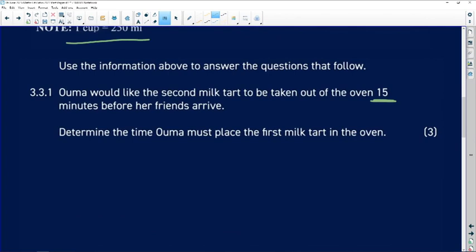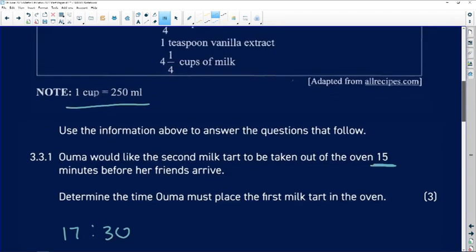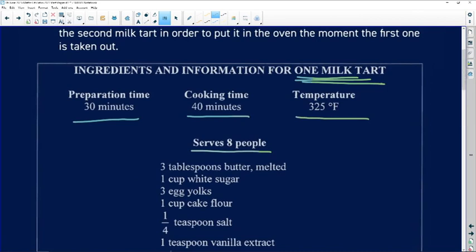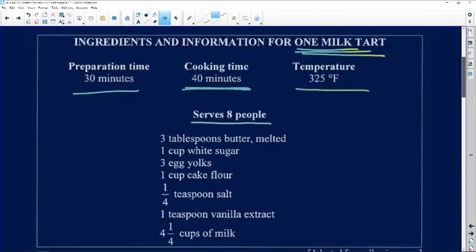That is what we know about that particular information that is given. Determine the time Ouma must place the first milk tart in the oven. This is very interesting. So we know that Ouma's friends are coming at half past 5, and then we also know according to the information given above that the cooking time for each one is going to be 40 minutes, so we need to subtract 40 minutes of that.